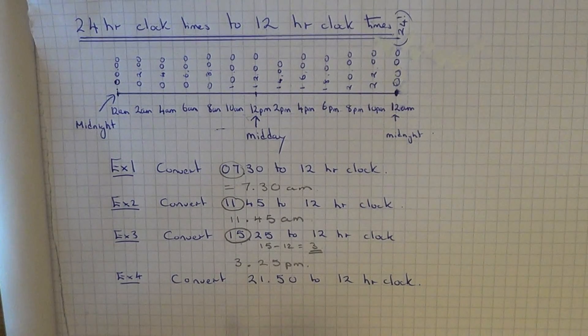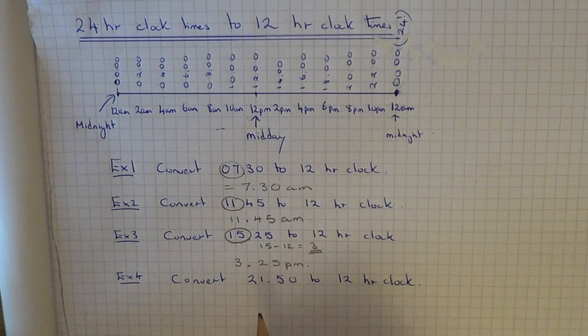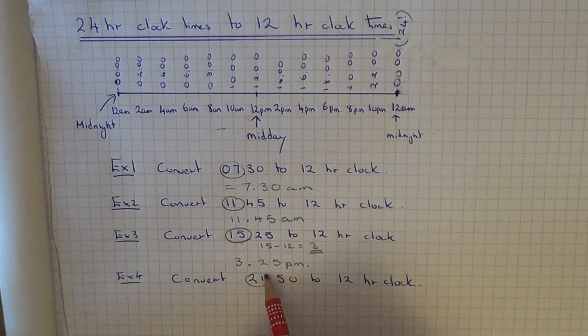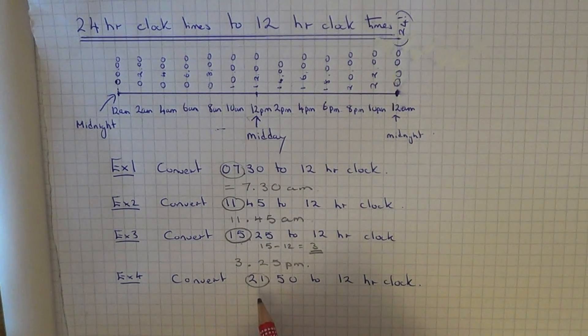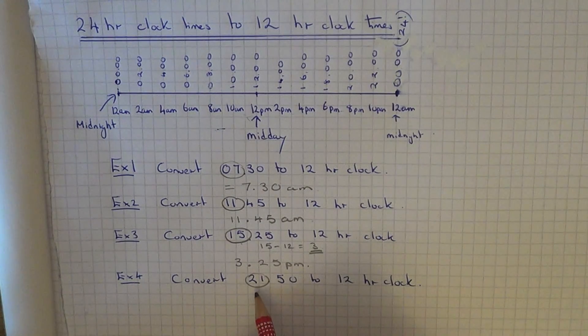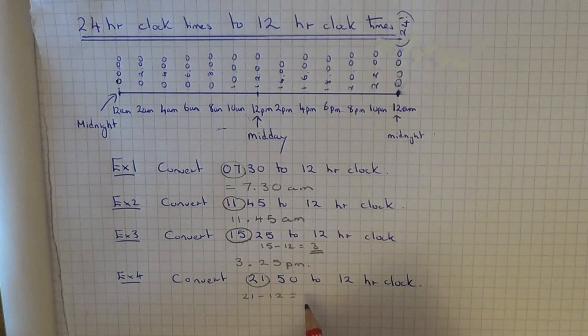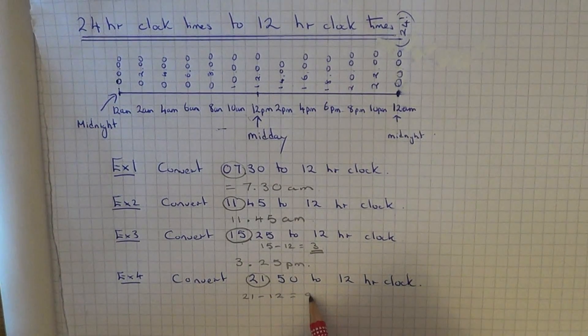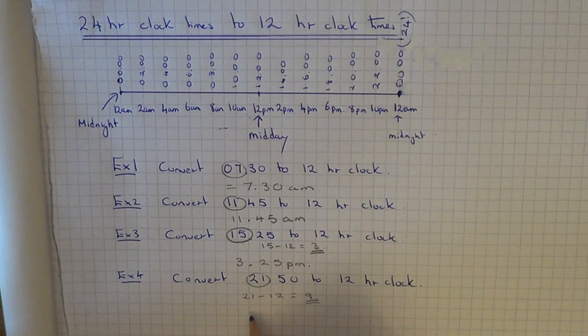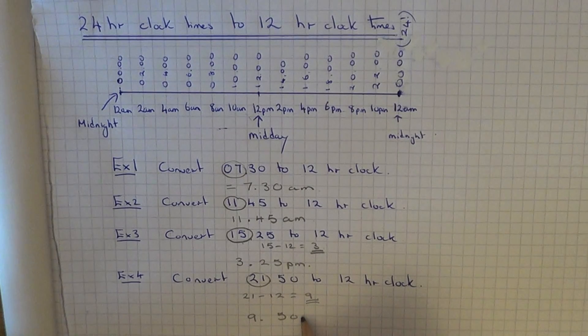Let's do one more example. This time we have to convert 21:50 into 12-hour clock. So again, focus on your hours. The hour part is bigger than 12, so the time is in the afternoon. If we quickly do 21 take away 12, that gives us 9. So our time will be 9:50 PM.